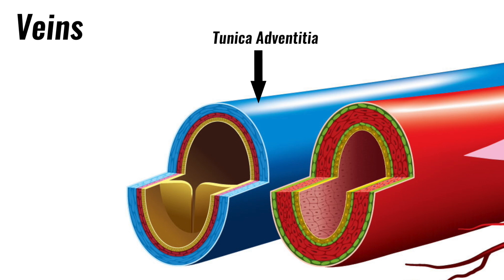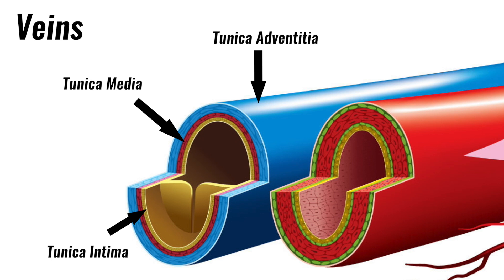The tunica adventitia is the strong outer covering. The tunica media is the middle layer consisting of smooth muscle and elastic fibres; this layer is thinner in veins than in arteries. The tunica intima is the inner layer which is in direct contact with the blood flowing through the vein. It consists of smooth endothelial cells and a hollow centre called the lumen through which blood flows. Veins also contain valves that prevent backflow of blood and aid venous return.